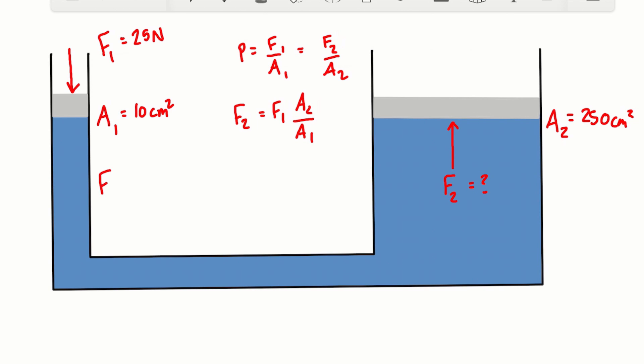And we're going to find that F2 is equal to F1, which is 25 newtons, times this ratio of A2, which is 250 centimeters squared over 10 centimeters squared.